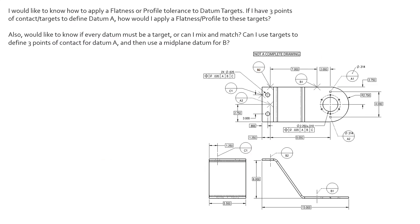These are not complete drawings — there's a handful of information missing — but they have enough information to get the point across. The first question: if I have three points of contact to define datum A, how do I apply flatness to these targets?